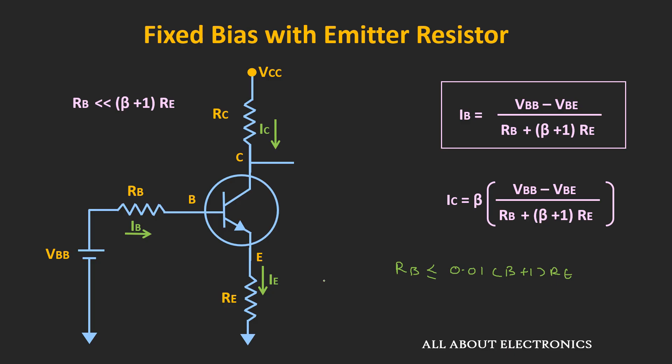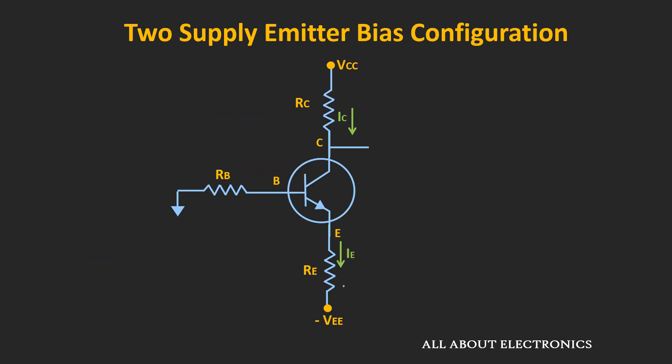So this configuration is also known as the emitter stabilized biasing configuration, because with the introduction of this emitter resistor, the circuit tries to maintain the operating point. Now there is another biasing configuration which can be used to stabilize the operating point — this is known as the two-supply or dual supply emitter bias configuration, or simply emitter bias configuration.